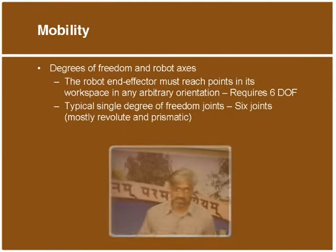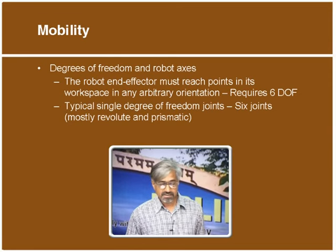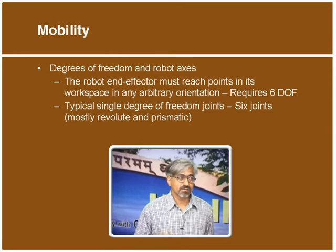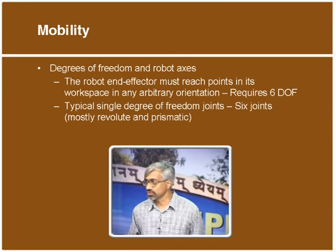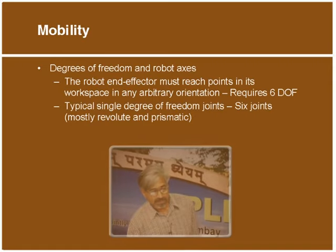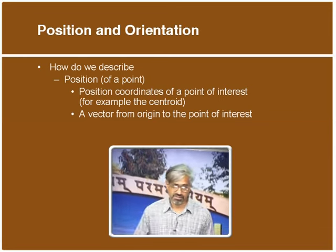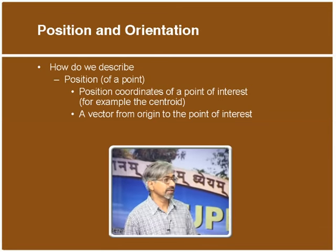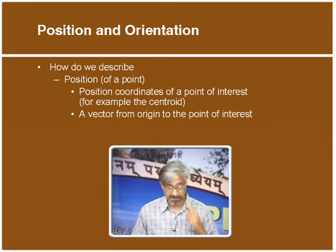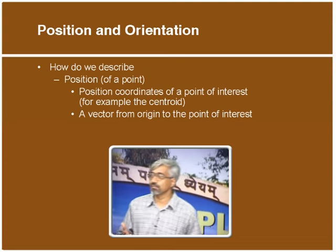We need six degrees of freedom for a general robot to be able to reach a point in any orientation. In most robots we use simple joints like revolute joints and prismatic joints. Now we come to the problem of how to describe position and orientation. We know that if you want to locate a point in space, we can describe it by coordinates with respect to some coordinate system.